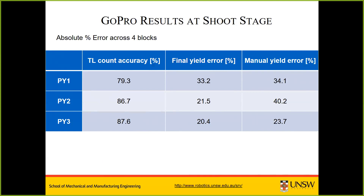In terms of accuracy: as the project progressed, the accuracy improved. This was measured by counting the exact number of shoots within a two-panel segment at 20 locations throughout the block and comparing that with what was detected in the video. The accuracy of the shoot counting is now up close to 90%. The accuracy of the final yield estimation has also been improving, and in the final year using shoot counting, the error is around 20% at the shoot stage — improving on naive manual counting.